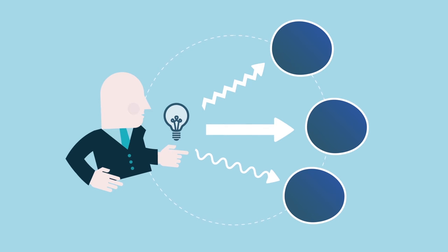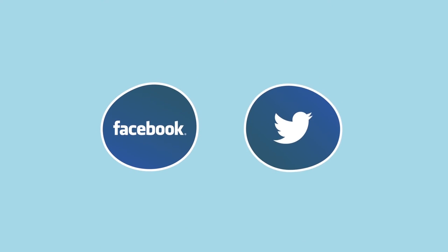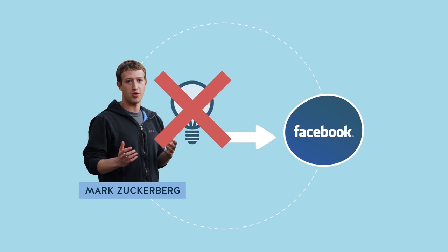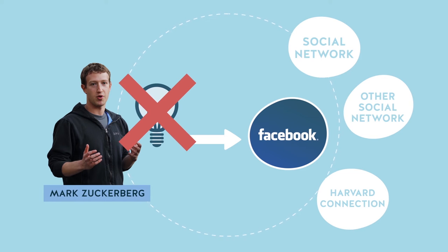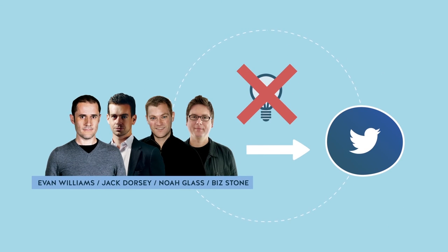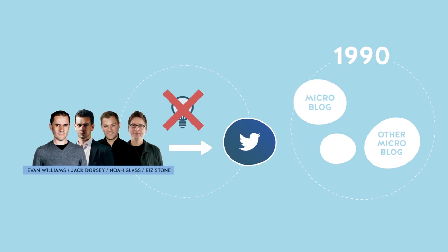As examples, just look at the cases of Facebook and Twitter. Mark Zuckerberg didn't have the brilliant and original idea of creating a social network to connect students since it already existed. He was even contacted to work for one of such social networks called the Harvard Connection. And the founders of Twitter did not create the concept of microblogging. Microblogging first emerged in the 90s.